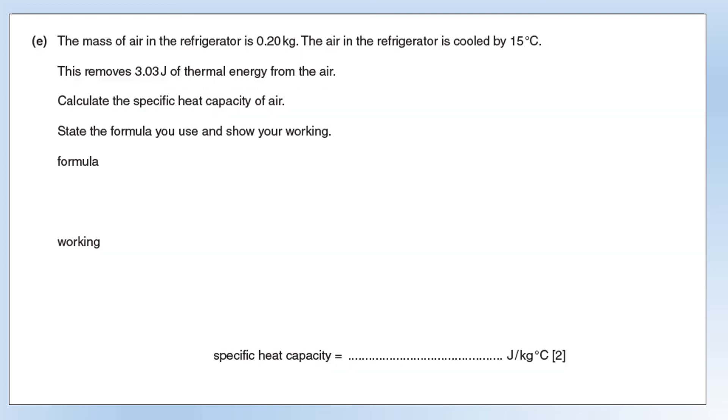The mass of the air in the refrigerator is 0.2 kilograms. The air is cooled by 15 degrees centigrade, and to do that, we've removed 3.03 joules of thermal energy. Calculate the specific heat capacity of air, showing the formula and working. The formula we're using is Q equals mc delta t. We want specific heat capacity, so I'm going to divide both sides by the mass and by the temperature change to get c by itself. And plug the numbers in, and we get a specific heat capacity of 1.01 joules per kilogram per kelvin, or per degree C, it makes no difference.